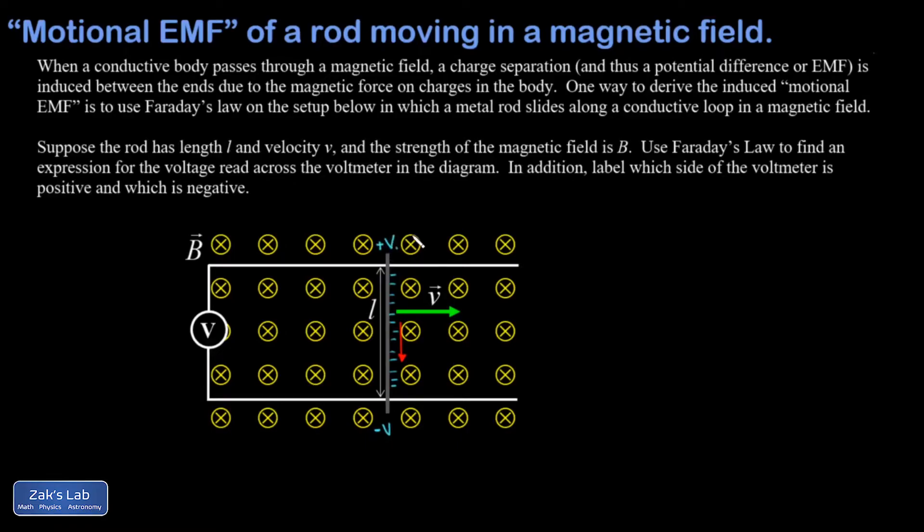Alternatively, if you complete the circuit, a current is going to end up flowing. Electrons moving clockwise, the current will be counterclockwise.